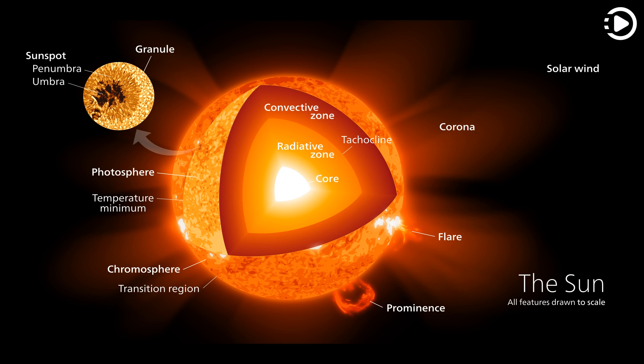Roughly three-quarters of the Sun's mass consists of hydrogen, the rest is mostly helium, with much smaller quantities of heavier elements, including oxygen, carbon, neon, and iron.